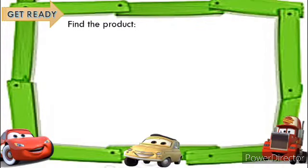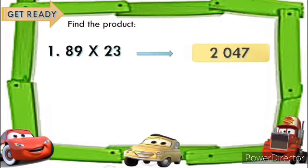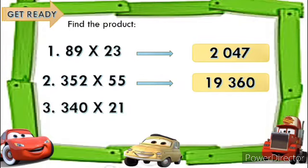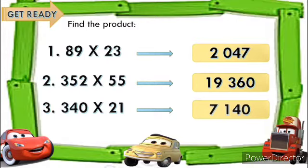Before we start, let's find the product of the following. Number 1: 89 times 23 equals? Very good! It's 2,047. Number 2: 352 times 55 equals? Absolutely! It's 19,360. How about number 3? 340 times 21 equals? Very good! It's 7,140.